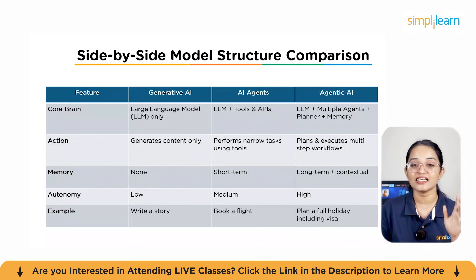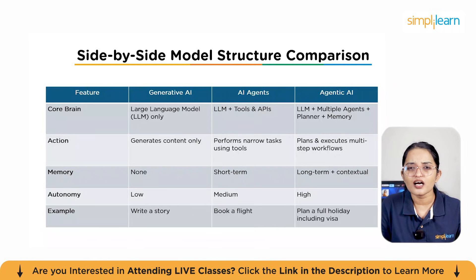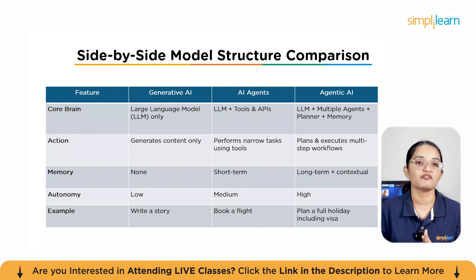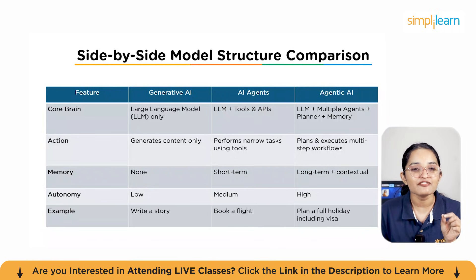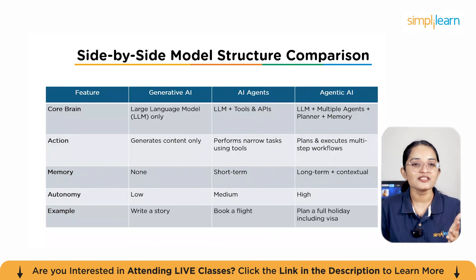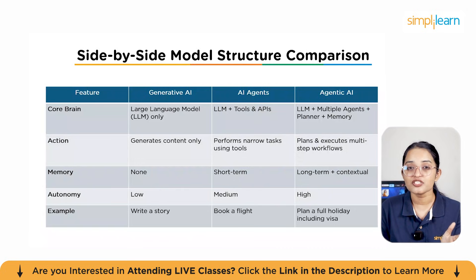Finally, agentic AI — this is where things get really exciting. Agentic AI combines the LLM brain with multiple agents, a planner, and memory. It doesn't just do one task; it can plan and execute a whole workflow. Instead of just booking a flight, it can plan your entire holiday — checking visa requirements, booking flights and hotels, and even scheduling activities. It works with long-term memory so it can learn from context and adapt over time. Its autonomy is high, almost like a project manager coordinating everything for you. To summarize: generative AI creates content; AI agents act on tools for specific tasks; and agentic AI plans, coordinates, and executes multi-step processes with memory.